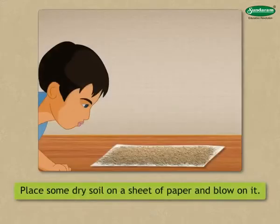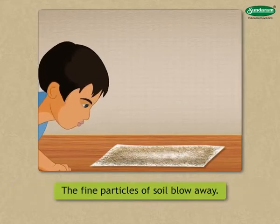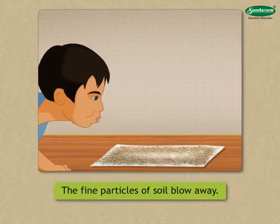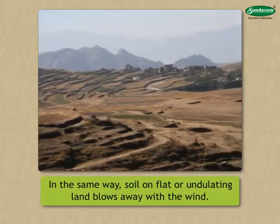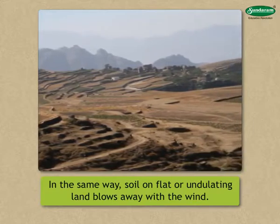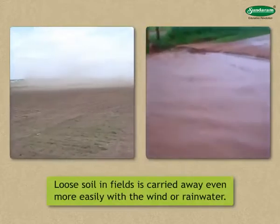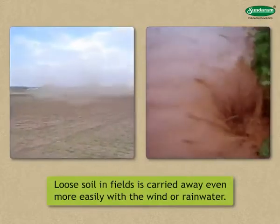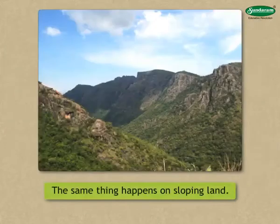Place some dry soil on a sheet of paper and blow on it. The fine particles of soil blow away. In the same way, soil on flat or undulating land blows away with the wind. Very large quantities of soil are blown away due to storms or strong winds. Loose soil in fields is carried away even more easily with the wind or rainwater, and the same thing happens on sloping land.